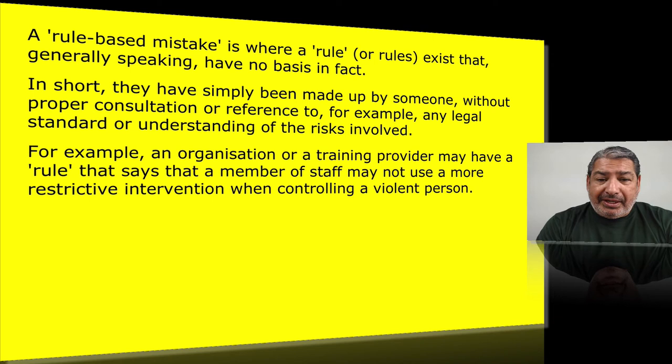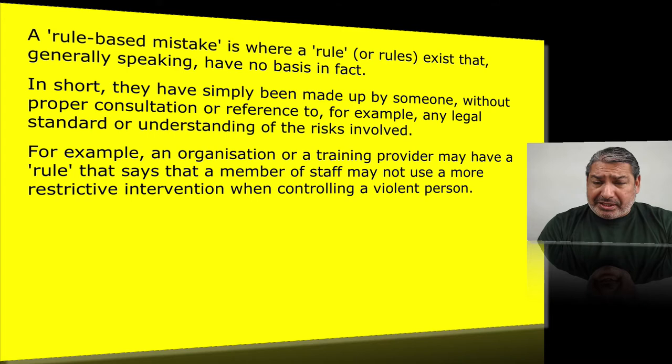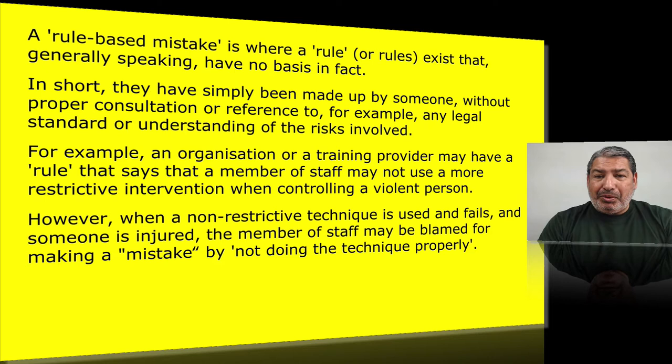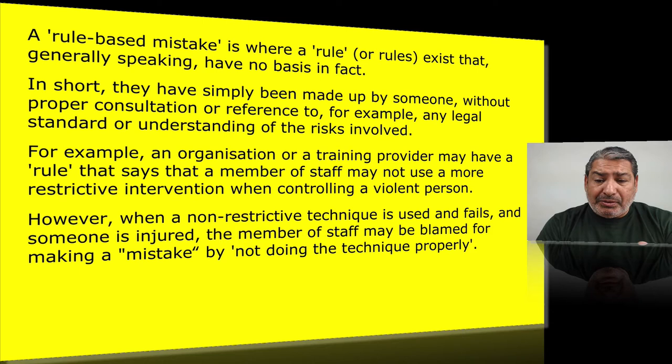For example, an organisational training provider may have a rule that says a member of staff may not use a more restrictive intervention when controlling a violent person. The ethics of that might be great, but when the non-restrictive technique fails and someone is injured, the member of staff may be blamed for not doing the technique properly. So where you've got a rule-based mistake — someone saying you can only use non-harmful techniques and if done properly it will work — when it fails, the staff member is blamed, which self-justifies the rule that has no basis in fact.